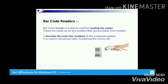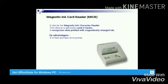The next device is the barcode reader, which is used for reading barcodes. When we buy any product from the market, there are code lines on the back of the product — those are barcodes. It decodes the code into numbers in the computer system and is mostly used in shopping malls, for numbering data, books, and so on.